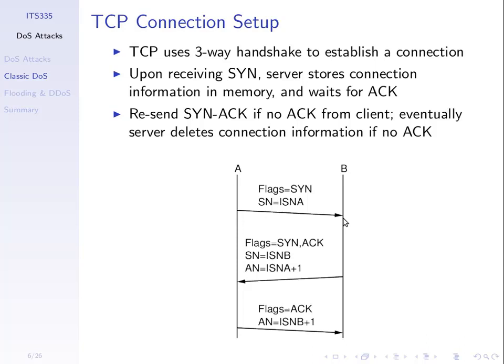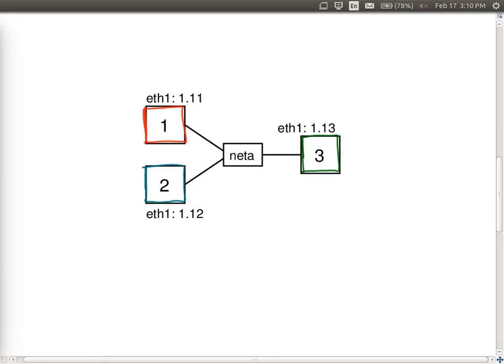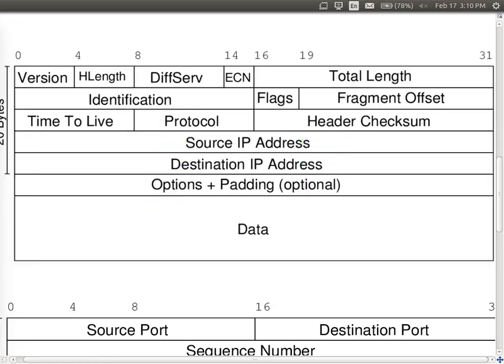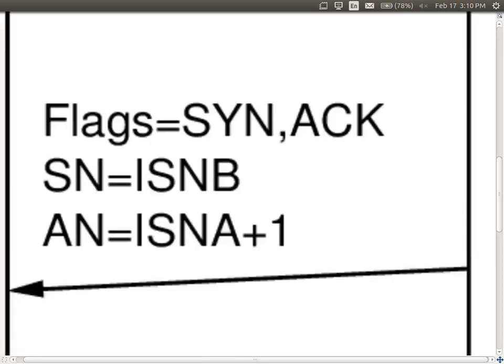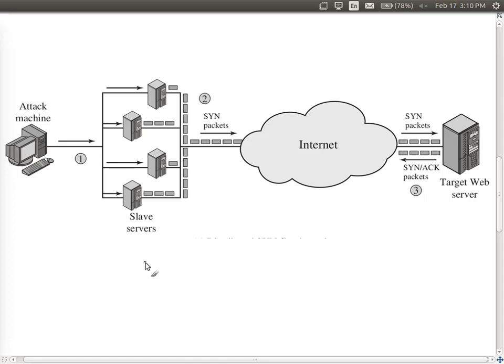Assuming the server is going to accept the connection because it's running a web server, it allocates some memory, records those values, allocates buffer space for the upcoming data transfer, and sends back a SYN-ACK, then waits for the final ACK. When the server receives the SYN message, memory is allocated. What a denial of service attack does is send many SYN packets to the server within a small amount of time, so memory is allocated for each one received. If you send enough, the memory fills up and the server cannot allocate more memory for subsequent requests.